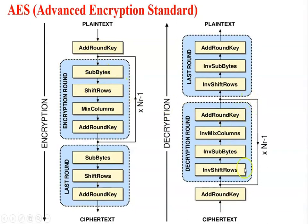The next transformation is mix column. Mix column operates on each column individually. A predefined matrix is multiplied by the state array to generate a new state array. For example, the first column is computed as: (2×87) XOR (3×6E) XOR (1×46) XOR (1×A6) = 47, and (1×87) XOR (2×6E) XOR (3×46) XOR (1×A6) = 37, generating the first output column values 47, 37, 94, ED.